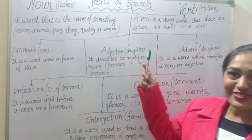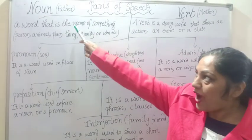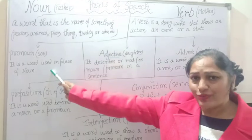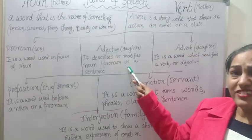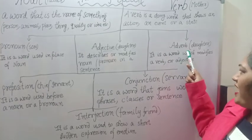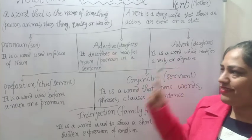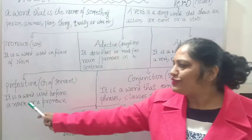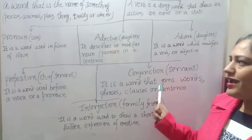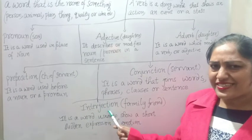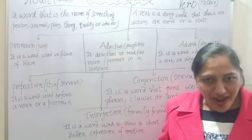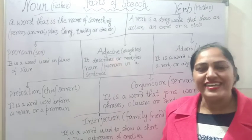So children, you must have understood these eight parts of speech. We have Noun — that is the name of something. We have Verb — doing words, action words. We have Pronoun — used in place of a noun. We have Adjective — used to describe or modify a noun or pronoun. We have Adverb — used to modify a verb or adjective. We have Preposition — chief servant, used before a noun or pronoun. We have Conjunction — joining words, joining all the family members. And then Interjection — a sudden expression of emotion. I hope with this video you are clear about parts of speech. Please mention the same in the comment section. Thank you.